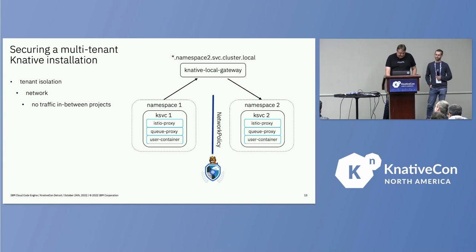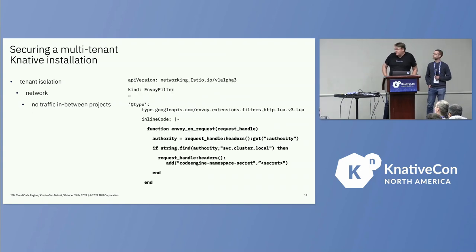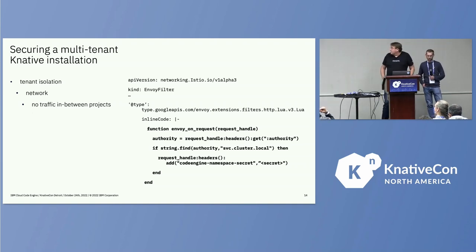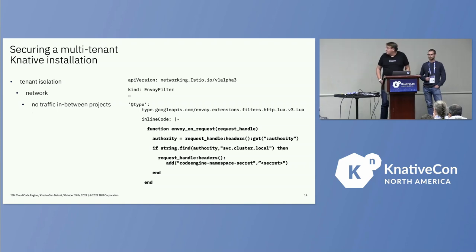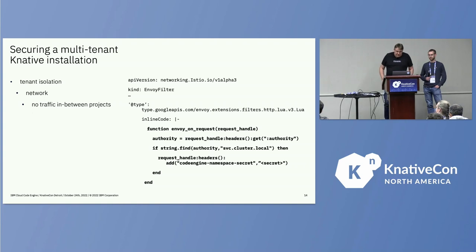We worked around this out-of-band from Knative and Istio by putting filters into Envoy. It's a simple piece of code that adds a secret to each outgoing cluster-local call. When we receive that call in the same namespace, we check that the added secret corresponds to the namespace it originated from, and of course we make sure this secret is not handed out to customers and we overwrite it.